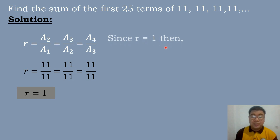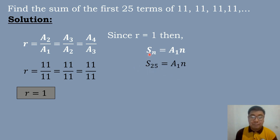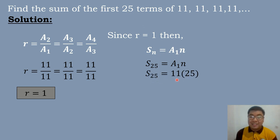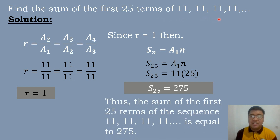Since R is equal to 1, we will use condition number 2, where the formula is S sub n equals A sub 1 times n. Substituting: S sub 25 equals 11 times 25. Multiplying 11 and 25 gives 275. So the sum of the first 25 terms of 11, 11, 11, 11 is equal to 275.